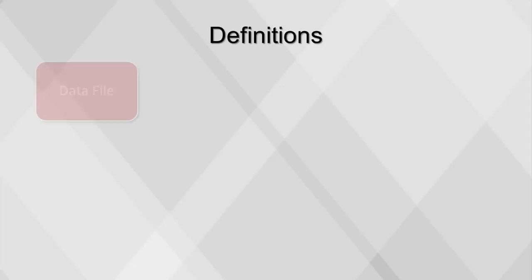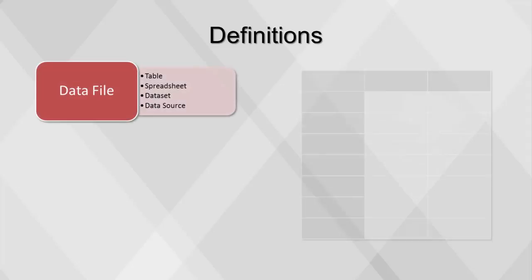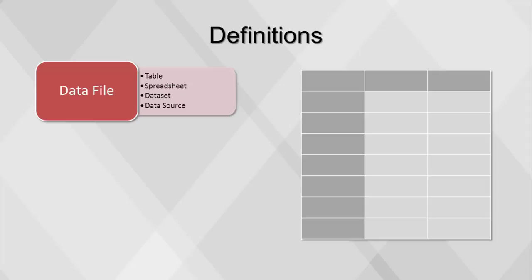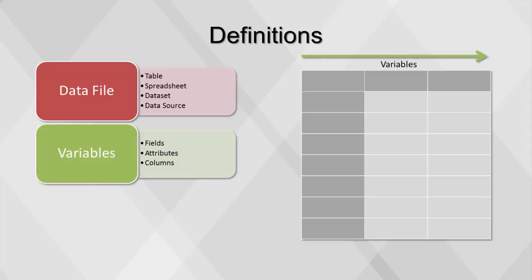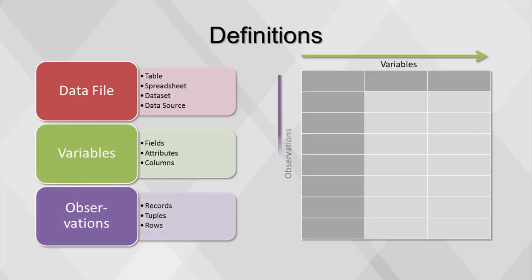There are many synonymous terms to describe the aspects of a typical data file, which can be referred to as a table, spreadsheet, data set, or data source. Along the horizontal axis are the variables, which can also be called fields, attributes, or columns. Along the vertical axis are the observations, also referred to as records, tuples, or rows.